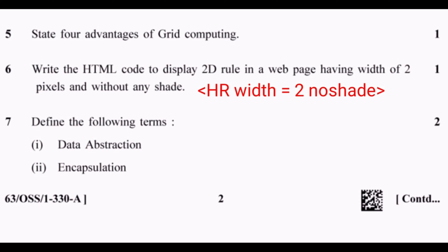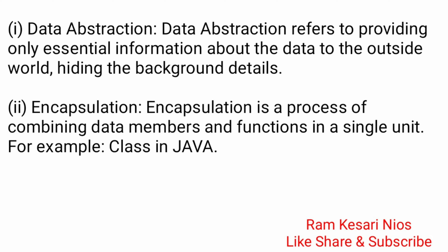Question 7: Define the following terms. 1. Data Abstraction: Data abstraction refers to providing only essential information about the data to the outside world, hiding the background details. 2. Encapsulation: Encapsulation is a process of combining data members and functions in a single unit, for example, a class in Java.